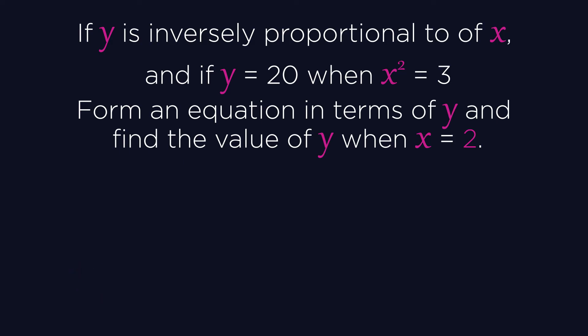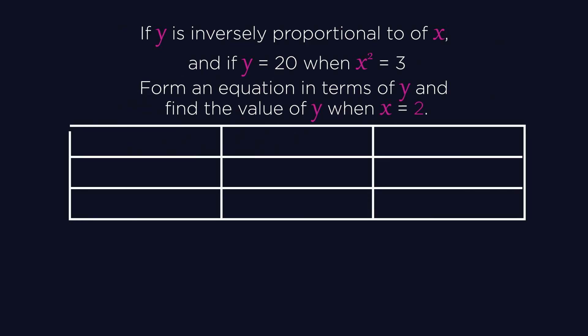Because in this question, the proportional quantities are y and x squared, the constant k links these values, not y and x. We therefore need to know the x squared values. You can use a table like this to help lay out the values.